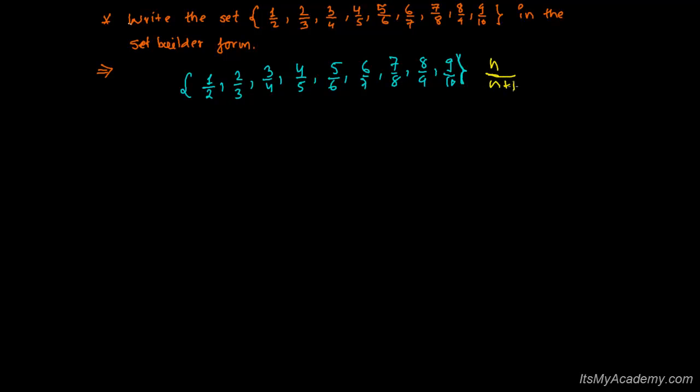So if it is n, then it will be n plus 1. If I'm writing at 10, then it will be 10 over 11. So this is my general term. Once I get the general term, I can easily get the set-builder form.